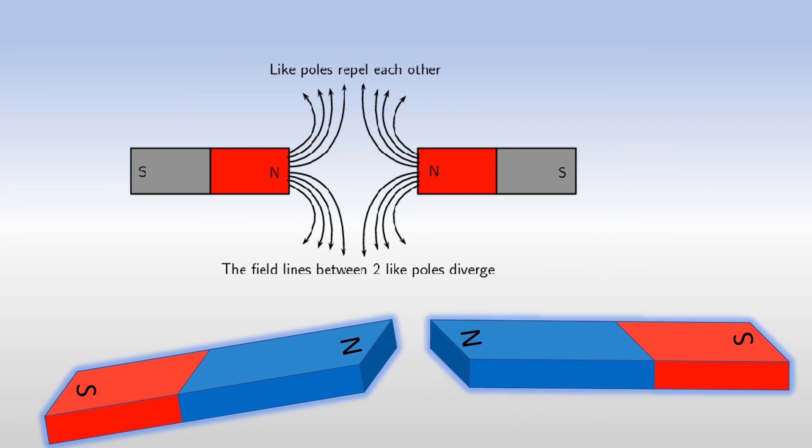Now let's see the magnetic field lines when two like poles are brought closer. When two like poles, that is here we have north and north. Here two magnets, the north pole of both the magnets are brought closer. That means two like poles have come together over here, the north pole of both the magnets.